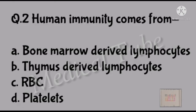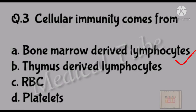Second number question: Human immunity comes from? Correct answer is A: bone marrow derived lymphocytes. Third number question: Cellular immunity comes from? Correct answer is B: thymus-derived lymphocytes.